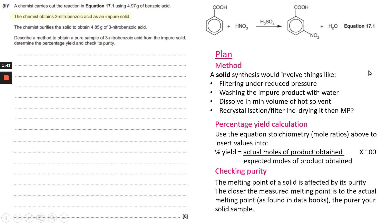To check the purity, the melting point of a solid is affected by its purity, so the closer the measured melting point you get is to the actual melting point as you can find in data books or data sheets, the purer your solid sample would be.